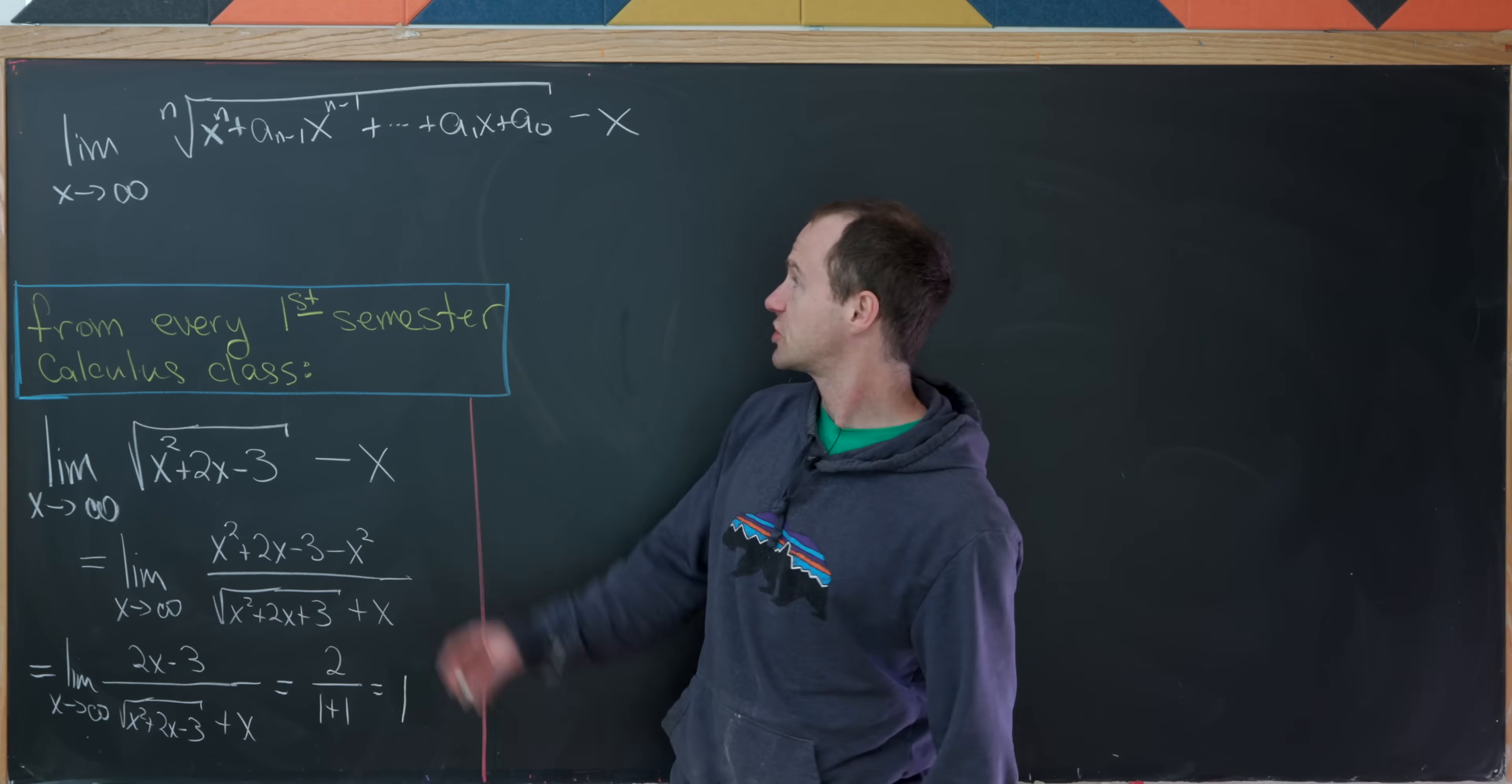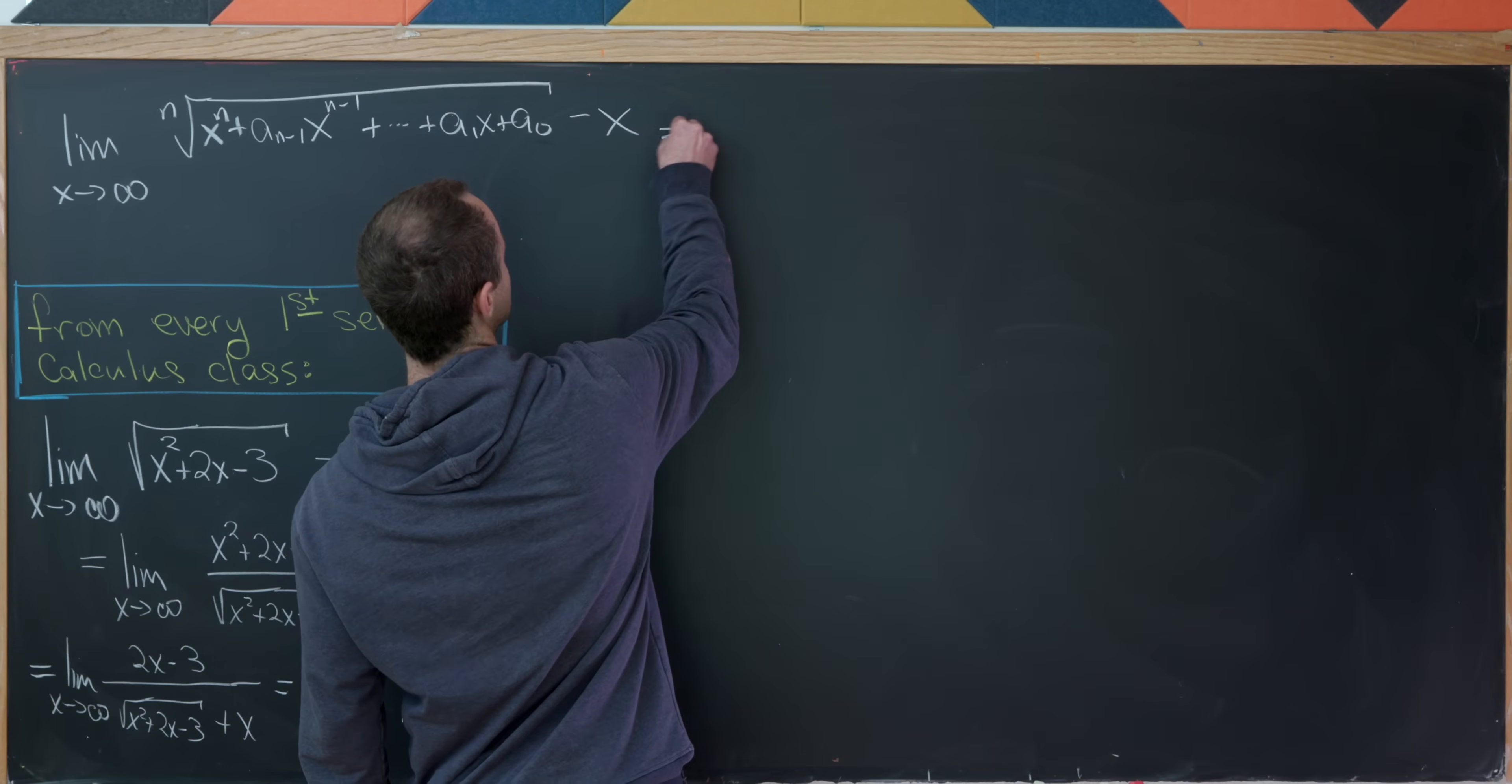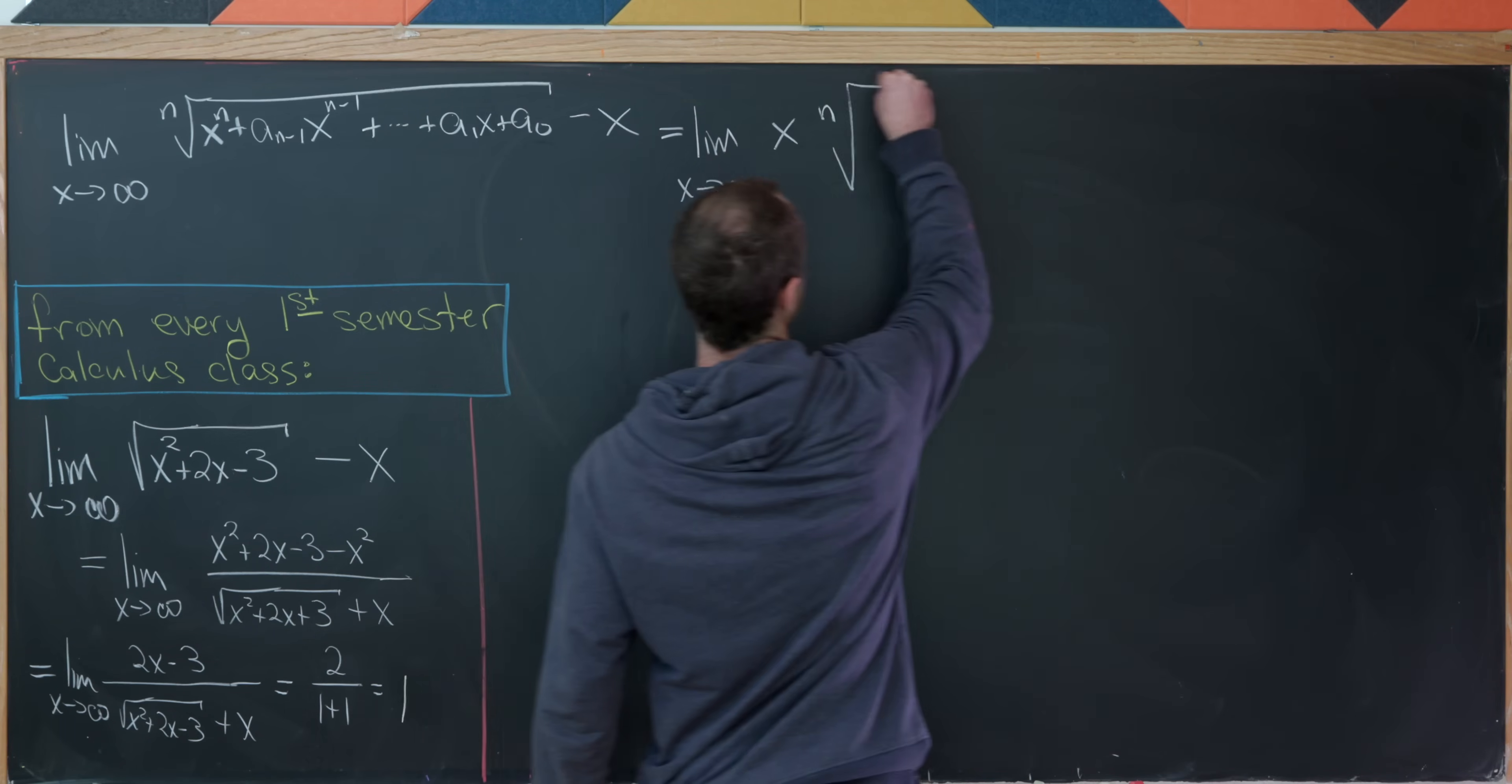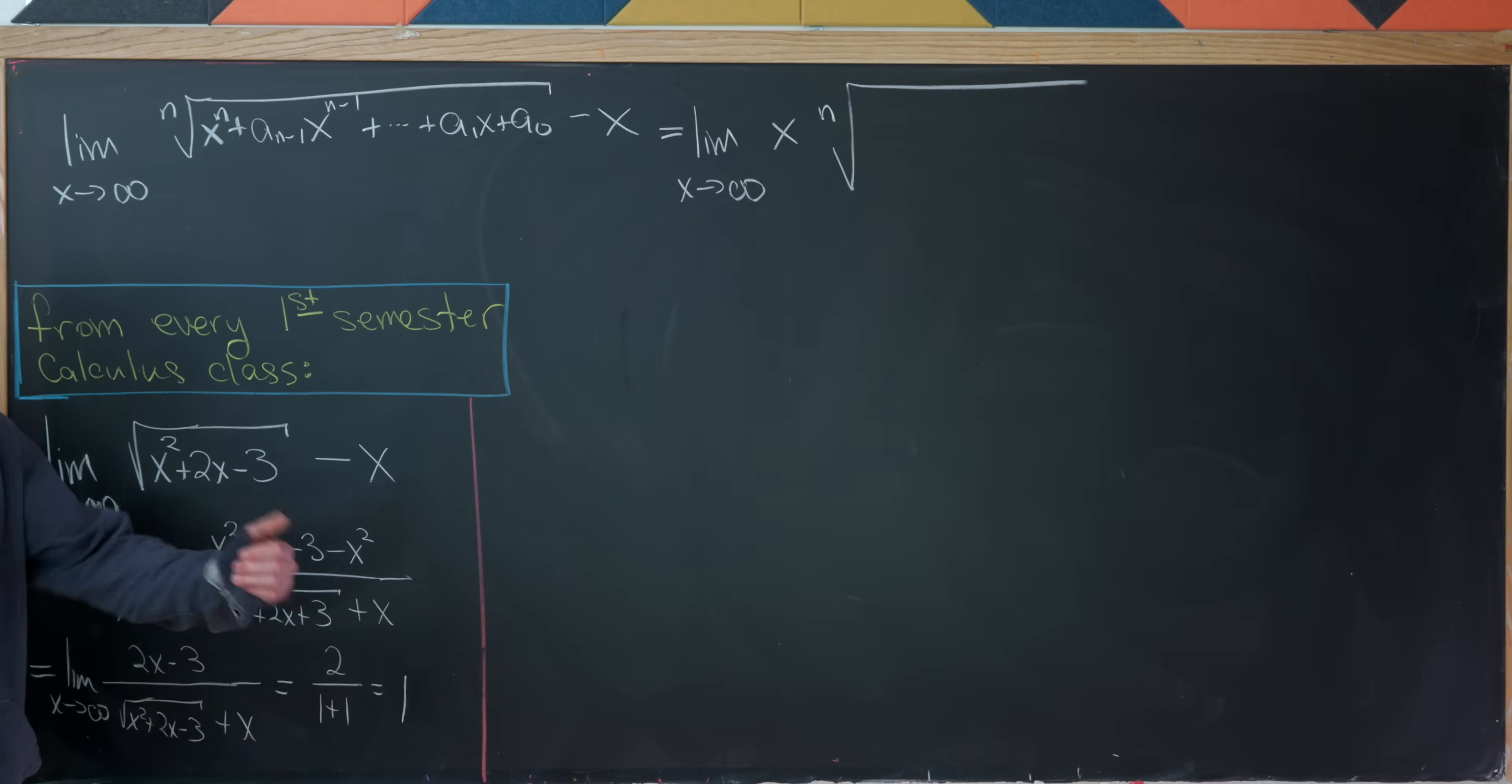So we'll start by factoring an x out of this nth root here. So let's see what that leaves us with. We'll have the limit as x goes to infinity. Factoring an x out means we divide everything inside of this nth root by x to the n, because factoring an x out is like factoring an x to the n over n out of this whole thing.